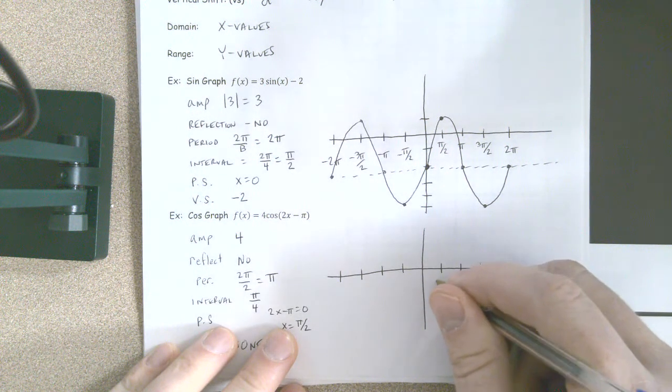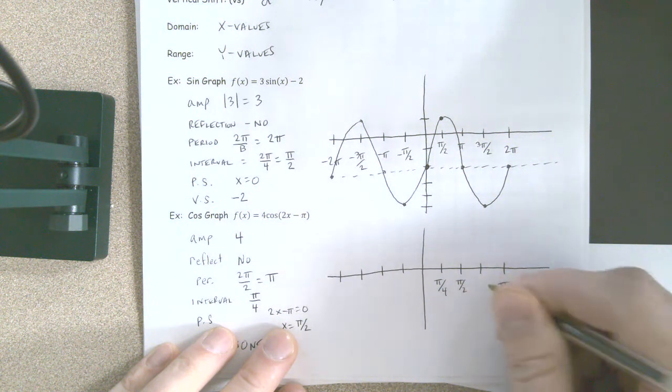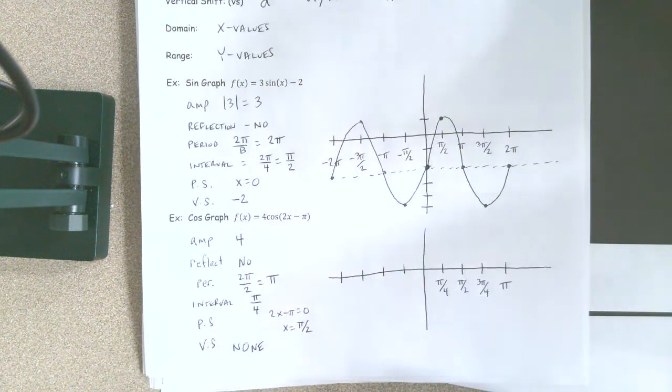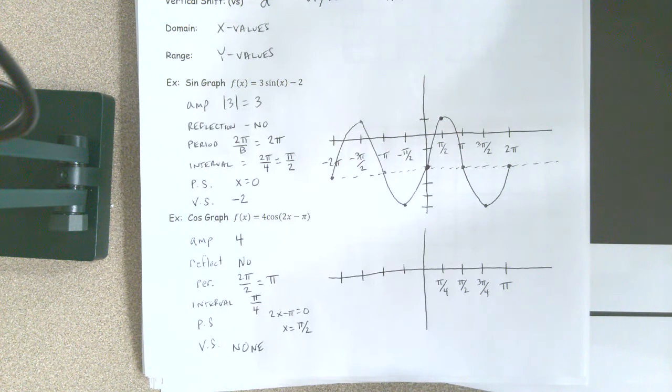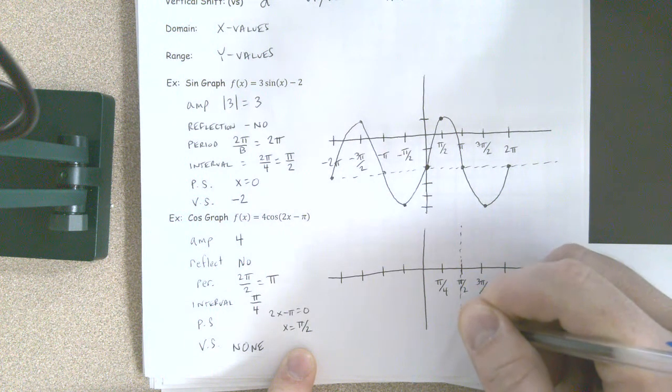it would be pi fourths, pi halves, three pi fourths. We know that our shift is pi halves, so I'm going to just sketch in a dotted line at pi halves because that's where I'm starting.